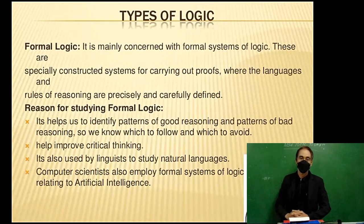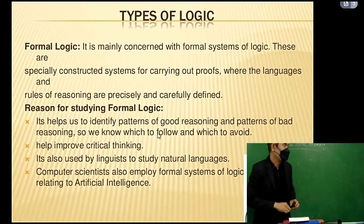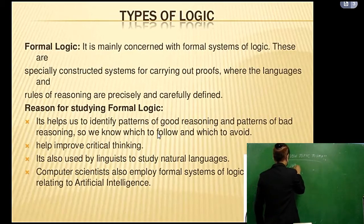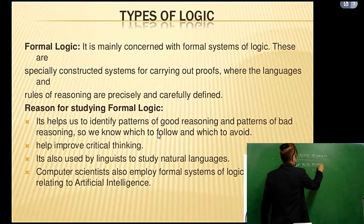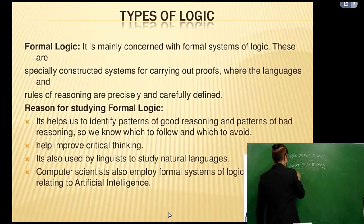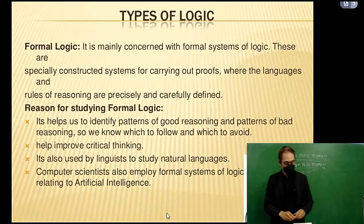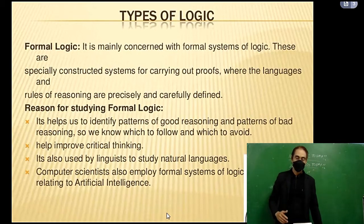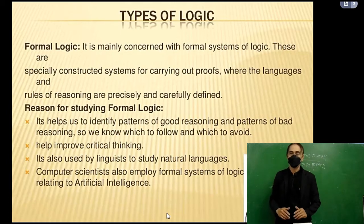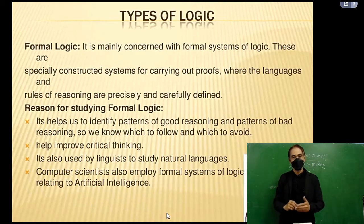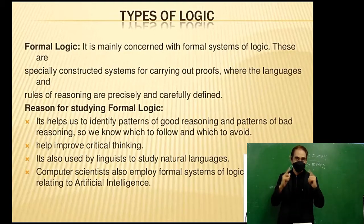Types of logic. Formal logic is mainly concerned with formal systems of logic. These are specially constructed systems for carrying out proofs, where the languages and rules of reasoning are precisely and carefully defined. Reasons for studying formal logic: it helps us identify patterns of good reasoning and patterns of bad reasoning, so we know which to follow and which to avoid. It helps improve critical thinking, is used by linguists to study natural languages, and computer scientists also employ formal systems of logic relating to artificial intelligence.